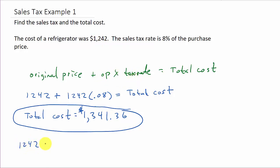So let's do that. We've got 1242 times 0.08, and that is $99.36. So this is how much you're paying in tax—the sales tax.